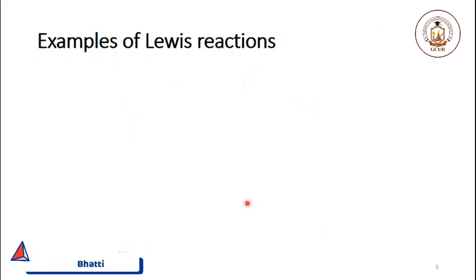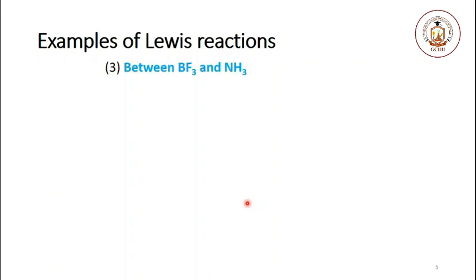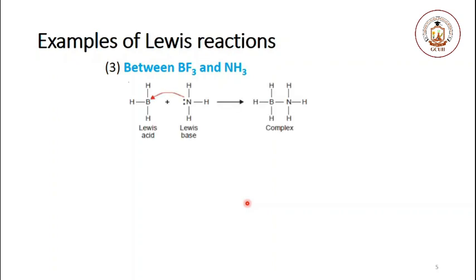Another Lewis acid-base reaction is between boron trifluoride and ammonia. Boron trifluoride has six valence electrons on the boron atom, which can accept an electron pair, making it a Lewis acid. The nitrogen atom of ammonia has a lone pair of electrons and is a Lewis base.